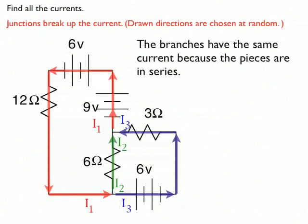Now in each branch, I've kind of color-coded it with the red, the green, and the blue, and they all have the same current in each branch. So the branch on the left, I've got a 9-volt battery, a 6-volt battery, and a 12-ohm resistor. They all have the same current.